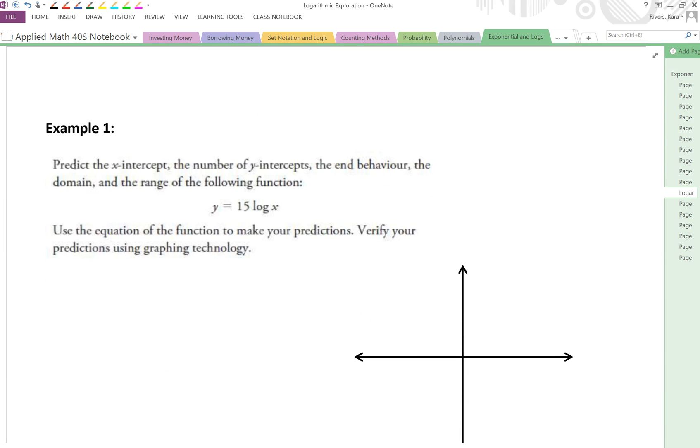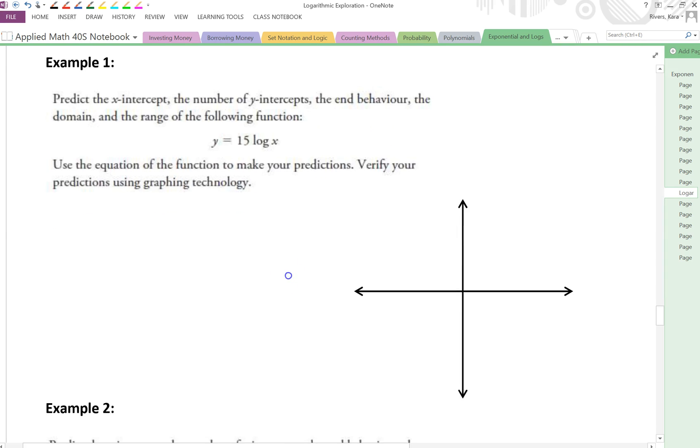Alright, so here's example 1. It says predict the x-intercept, the number of y-intercepts and the end behavior, the domain and the range of the following function. Use the equation of the function to make your predictions, and then once you've done that, verify your predictions using the graphing technology. After going through the investigation, you should see there are some common characteristics.